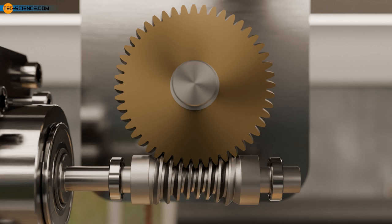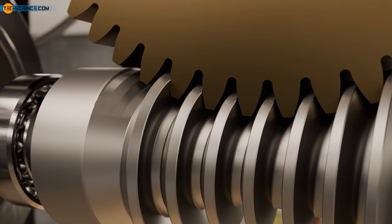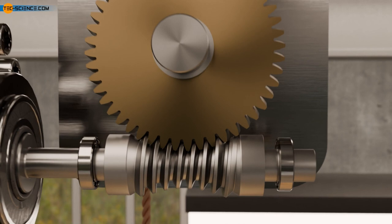However, this requires the worm to be specially matched to the helical gear, which makes manufacturing more expensive. However, the advantage of such a variant is the radial positioning of the worm gear when combined with a simple helical gear, which allows a greater tolerance than is the case with a globoid worm gear.